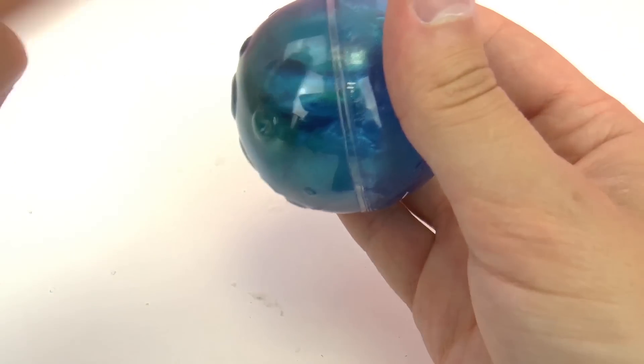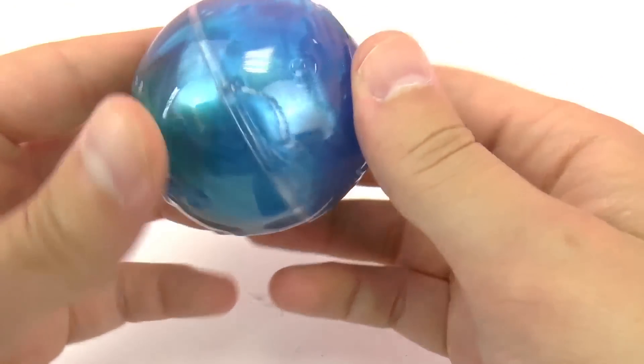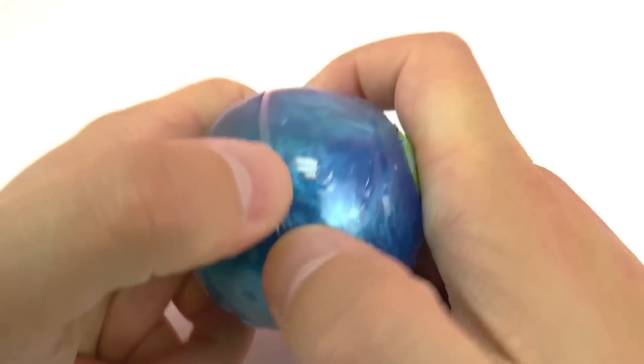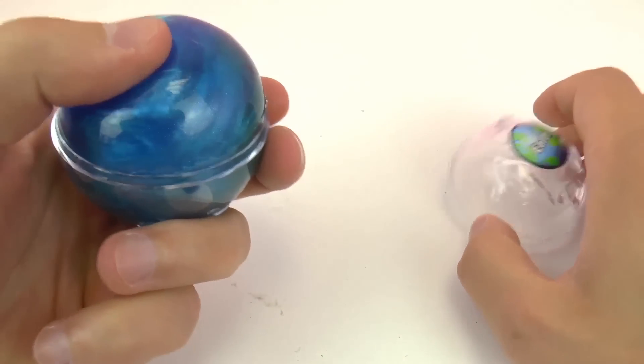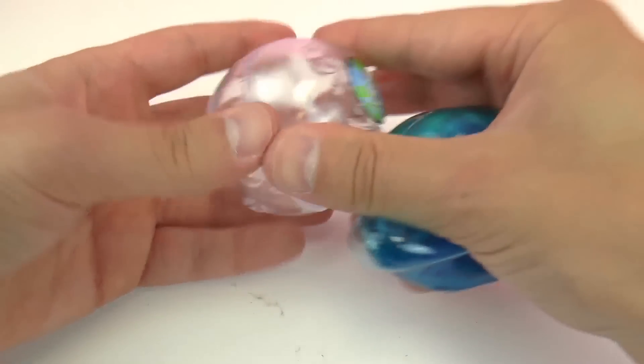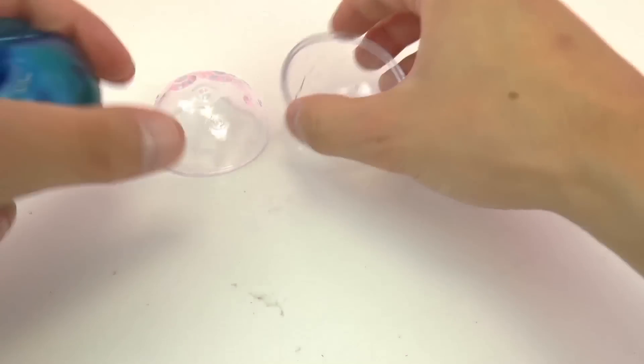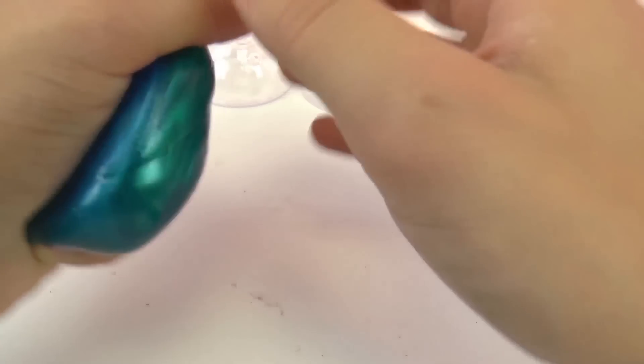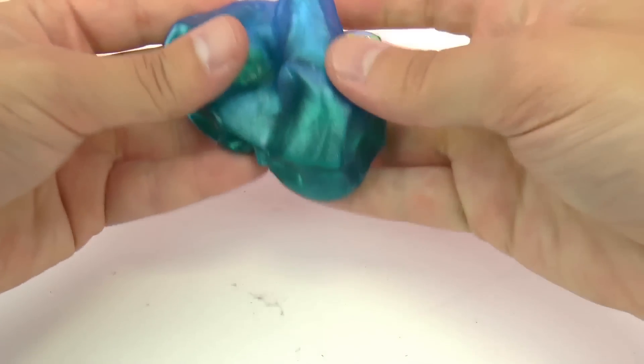Here we have our Earth Putty Planet. As you can see, it comes in a fun little round container. The color is absolutely amazing! It's kind of a blue-turquoise-green and it's so shiny.